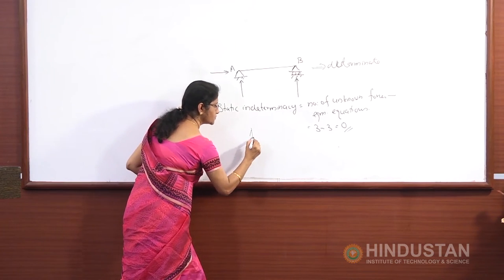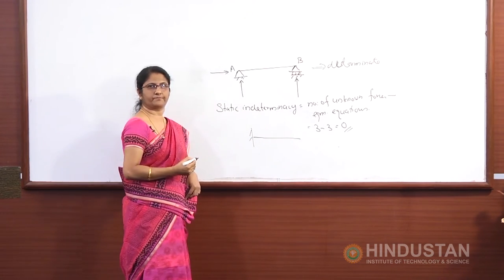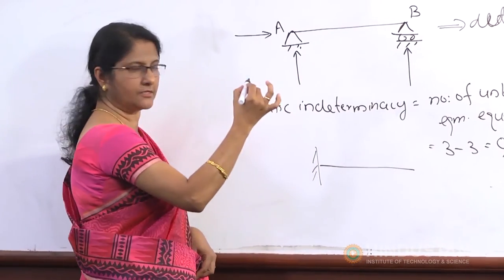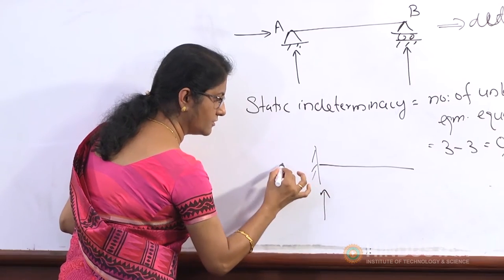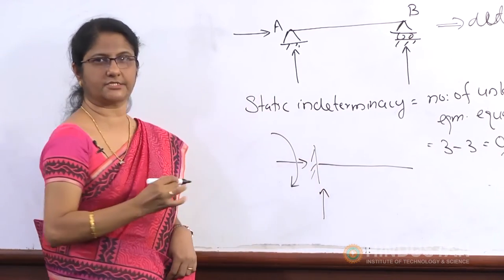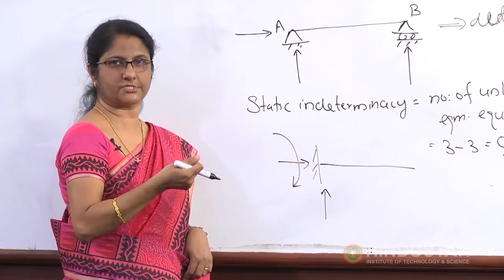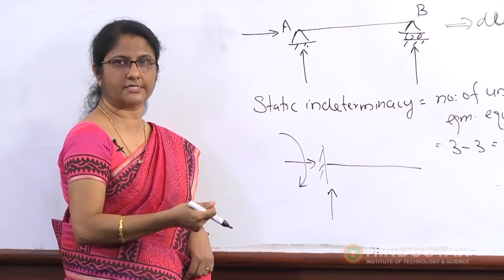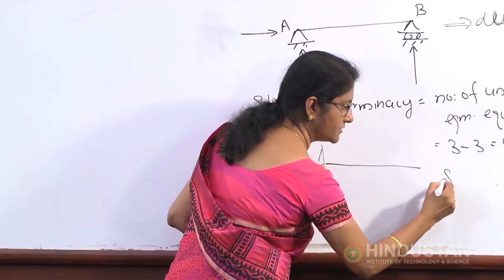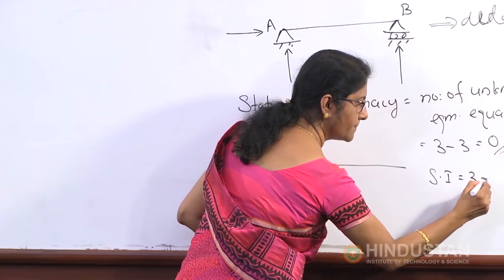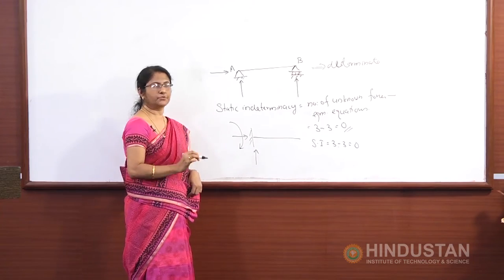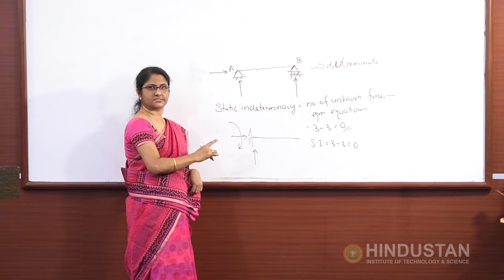Similarly, there is a cantilever — one end is fixed and the other end is free. The fixed end has three reactions: horizontal, vertical, and a moment, because it is held in position and cannot rotate or translate — it is completely restrained. So again, the static indeterminacy becomes three minus three equals zero. These are the two examples of determinate structures.